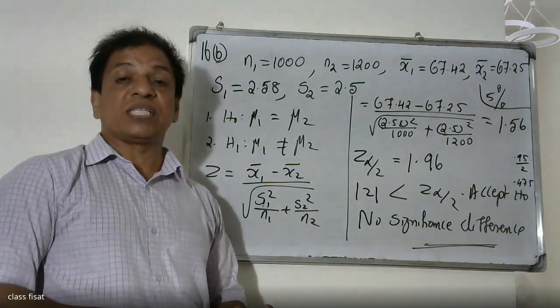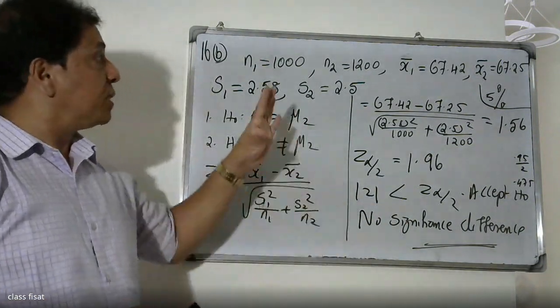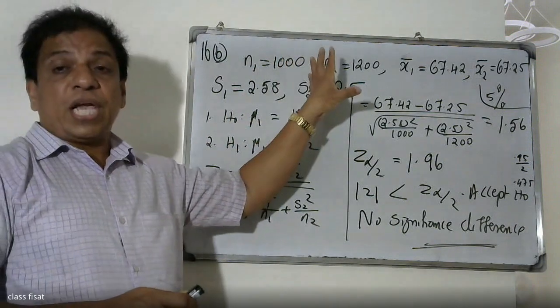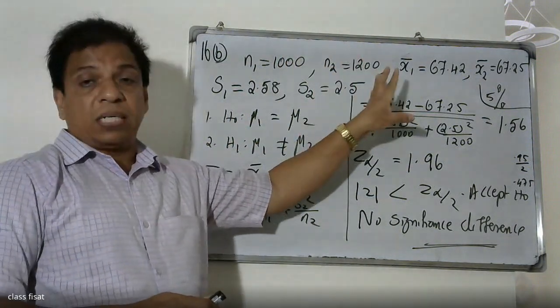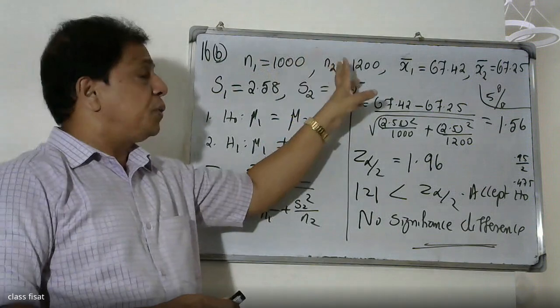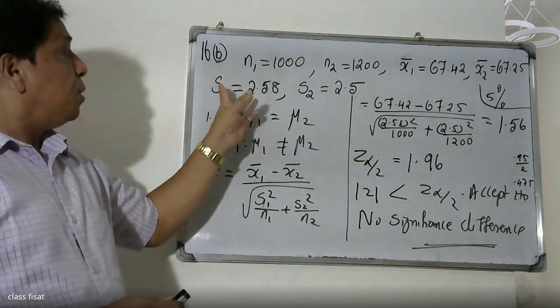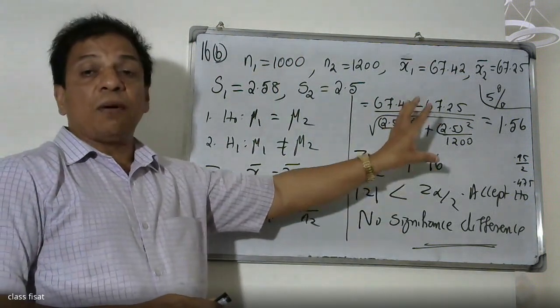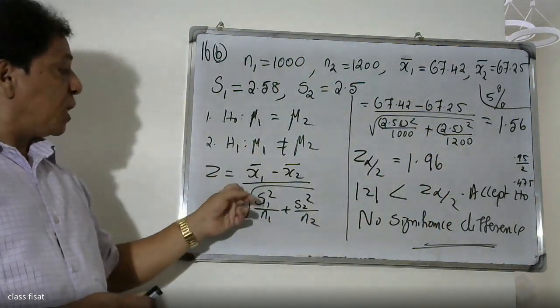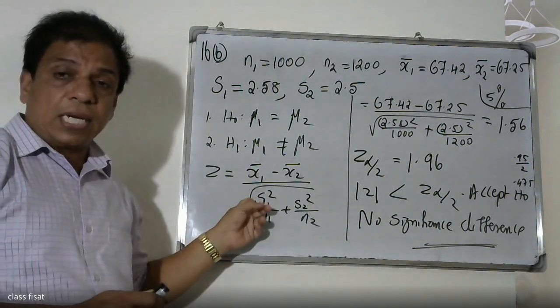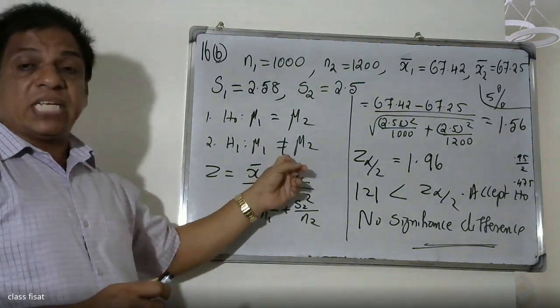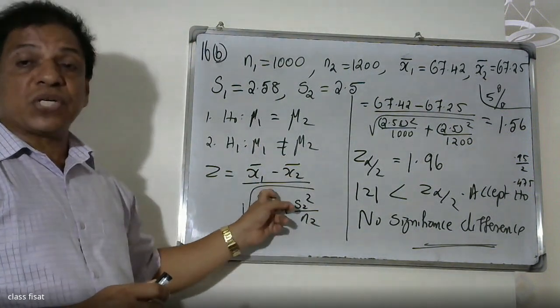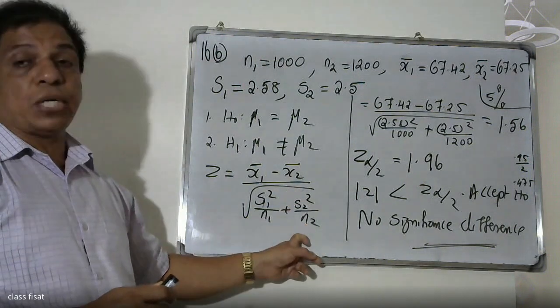n1 and n2 are sample sizes. x̄1 and x̄2 are sample means. For testing hypothesis problems, use the formula: Z = (x̄1 - x̄2) divided by root of (s1² / n1 + s2² / n2).